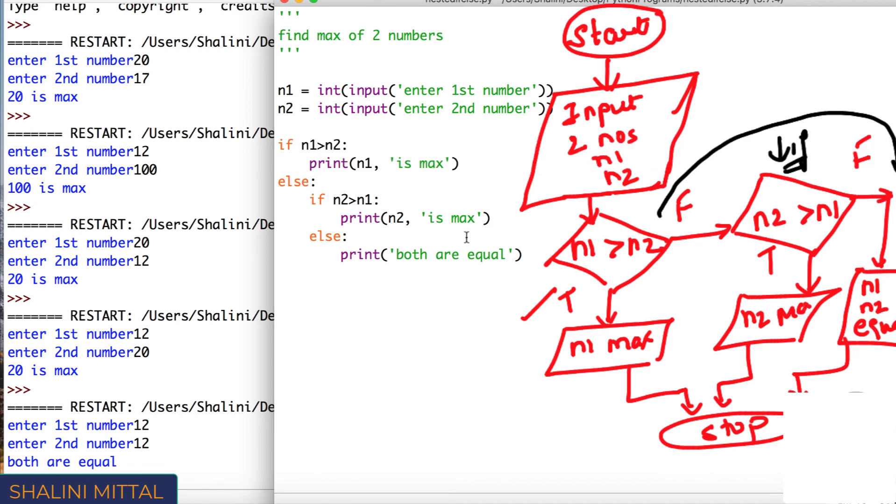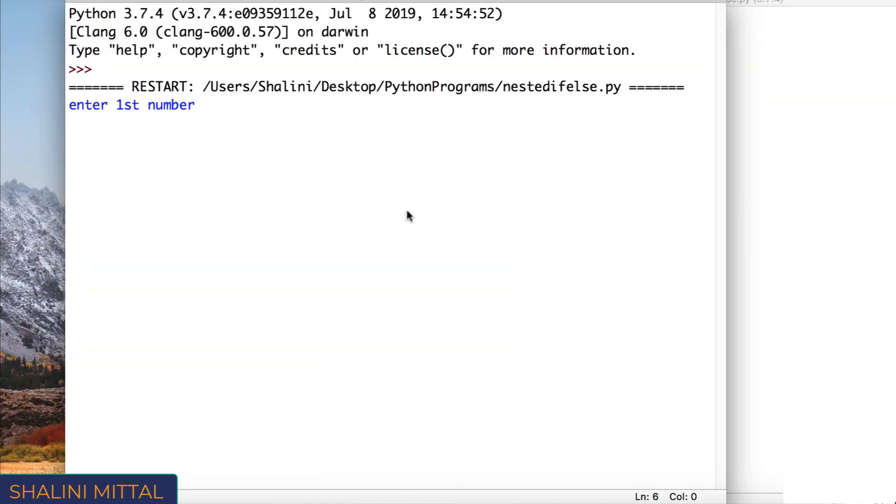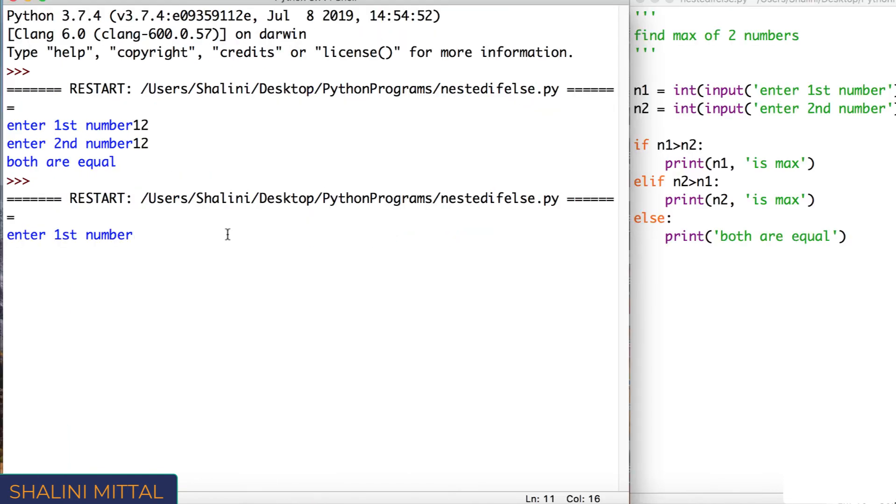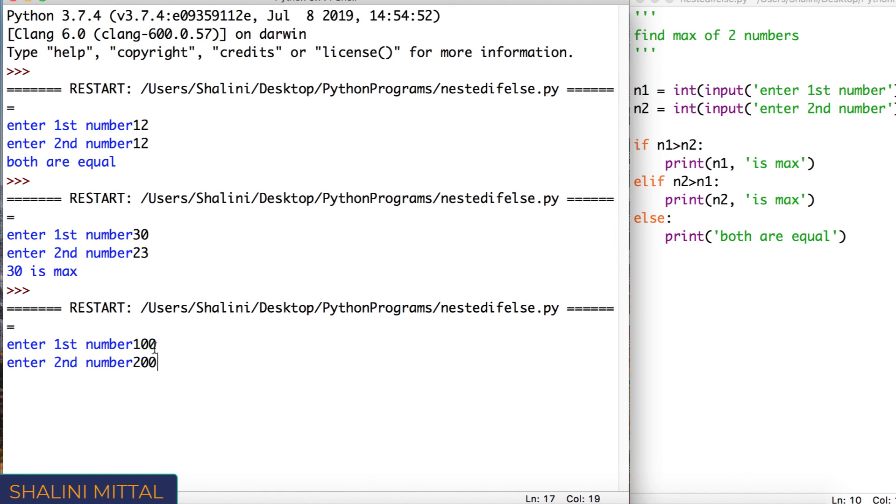Now this can be shortened in python by, I can say if n1 greater than n2, print n1 is max, elif, I'll check this condition, else I'll say both are equal. So then you can use the nested if else by saying if, elif, else and now if I run the program, it's going to be the same. If I run this program again, enter first number 12, second number 12, both are equal. Again if I run it, enter first number 30, second number 23, 30 is max. Again if I run it, I can say suppose 100 and then I can say 200, you can say 200 is max. So this is called as nested if else.